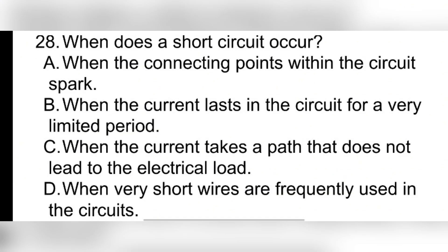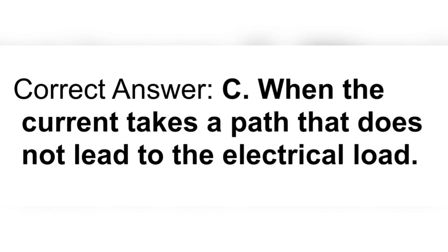Question 28. When does a short circuit occur? A. When the connecting points within the circuit spark. B. When the current lasts in the circuit for a very limited period. C. When the current takes a path that does not lead to the electrical load. D. When very short wires are frequently used in the circuits. Correct answer: C. When the current takes a path that does not lead to the electrical load.